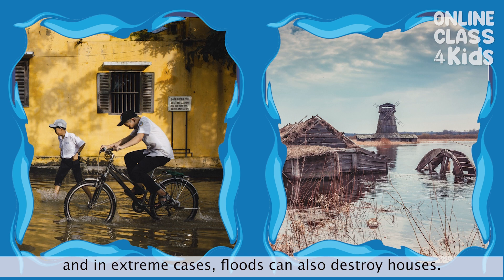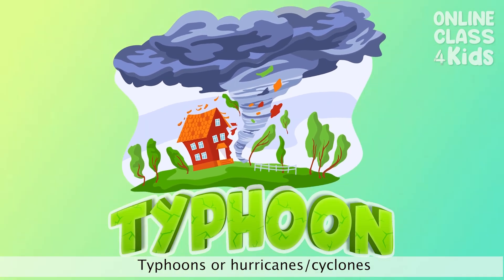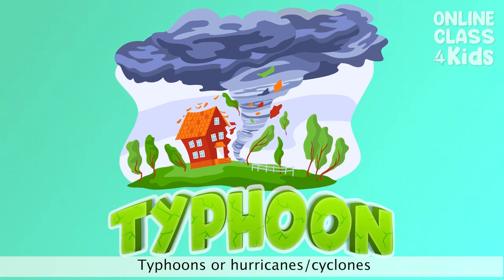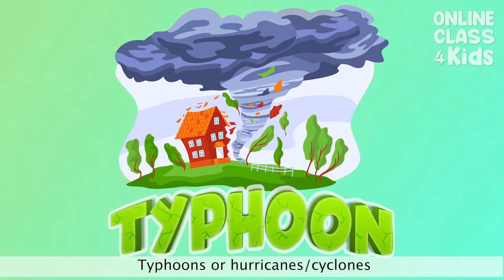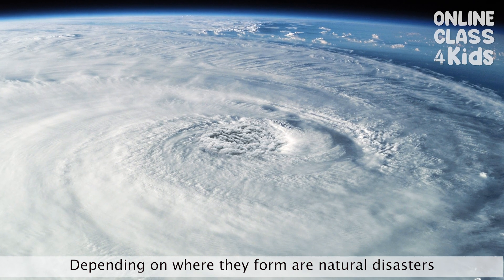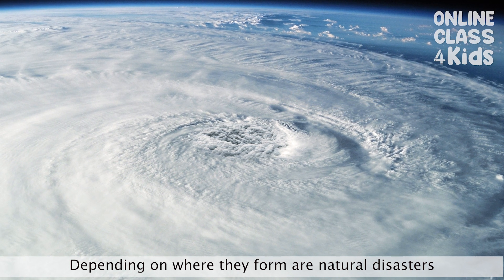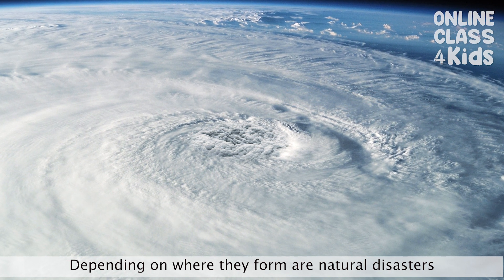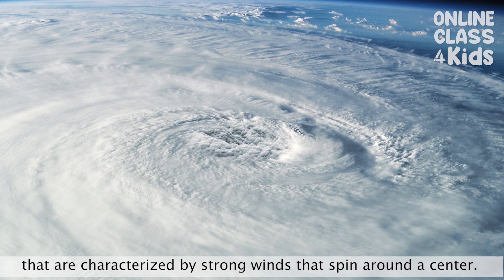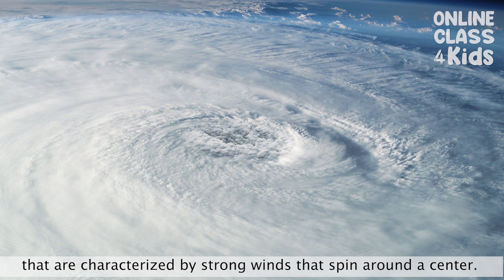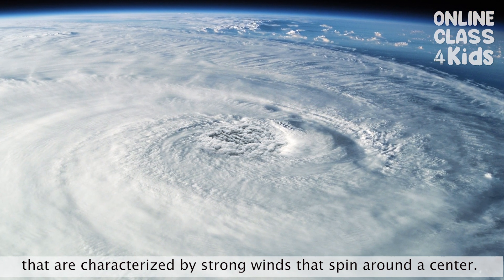Typhoons, hurricanes, or cyclones — depending on where they form — are natural disasters that are characterized by strong winds that spin around the center.